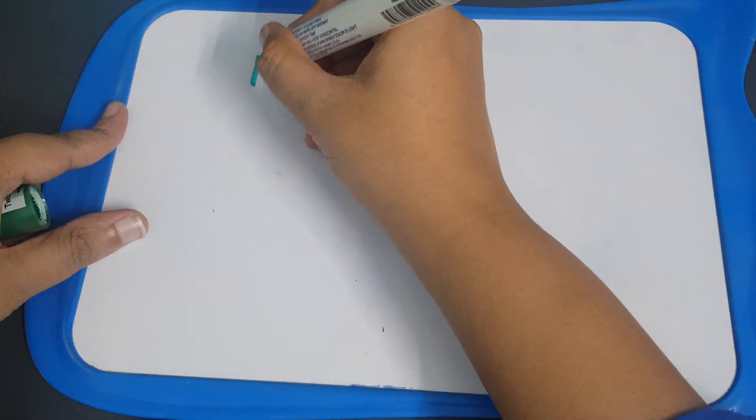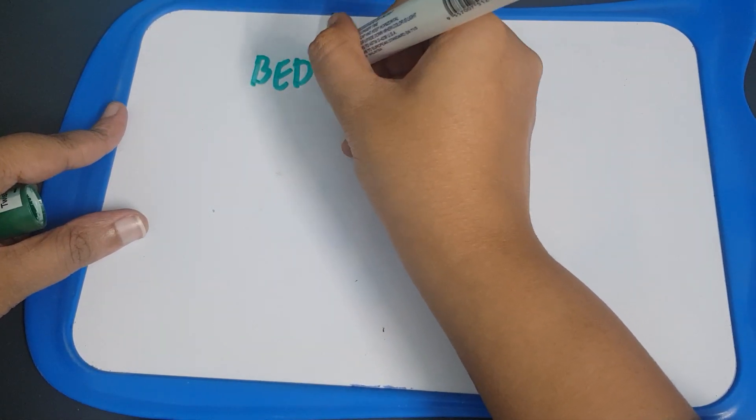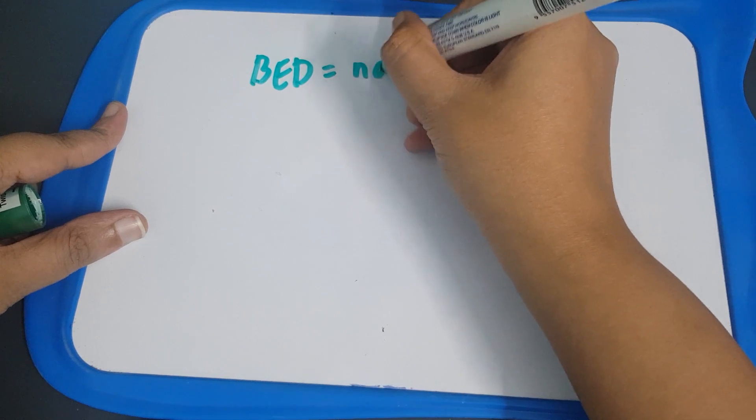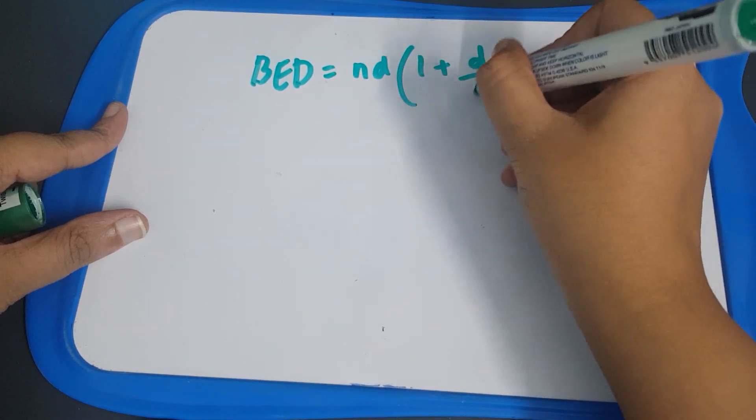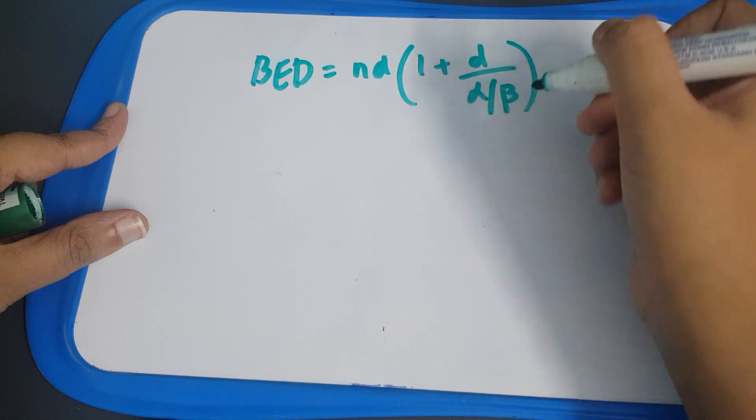What is the formula for BED? BED is equal to ND, 1 plus D by alpha beta, alpha by beta ratio.